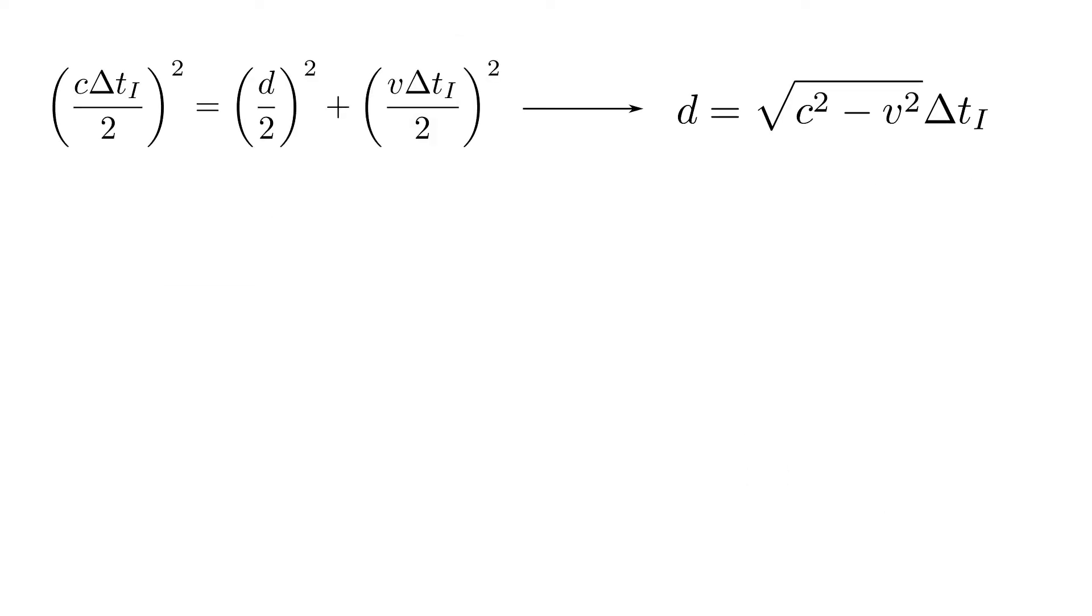Rearranging for d, we find that d is equal to the square root of c squared minus v squared times delta t i. But since this is the same distance that Albert measures in the perpendicular direction,